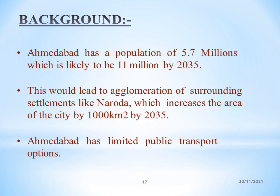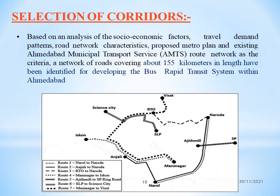Ahmedabad has a population of 5.7 million, which is likely to be 11 million by 2035. This would lead to agglomeration of surrounding settlements like Naroda, increasing the area of the city by 1,000 square kilometers by 2035. Ahmedabad has limited public transport. The selection of corridors was based on socio-economic factors, travel demand patterns, road network characterization, proposed metro plan, and existing AMTS route network. A network of roads covering about 155 kilometers has been identified for developing the BRTS within Ahmedabad.